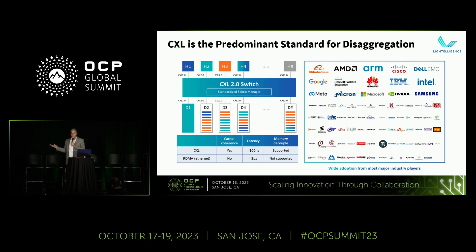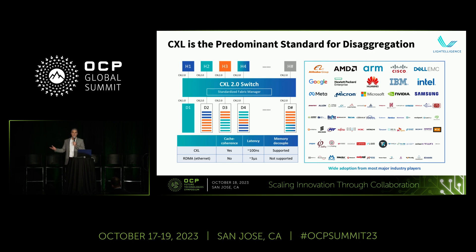The wide adoption of CXL is pretty obvious in the industry — 250 member companies. The real advantage is that CXL adds memory and cache coherency protocols to the ubiquitous PCI fabric.